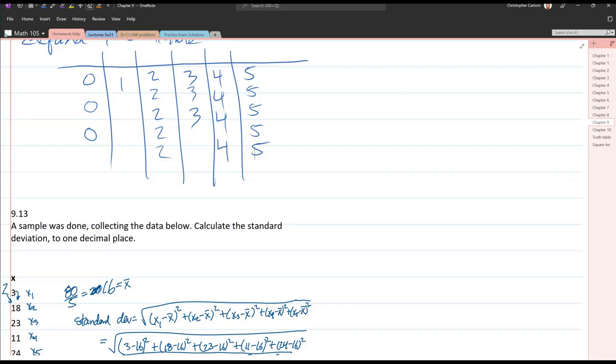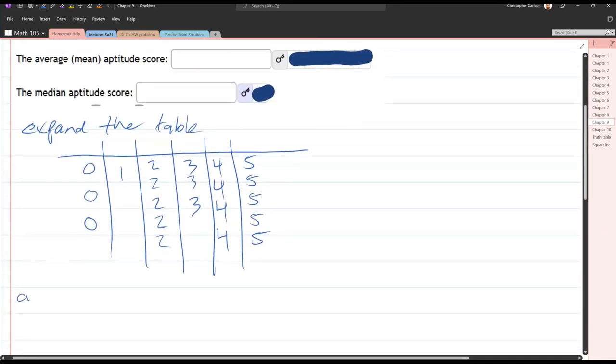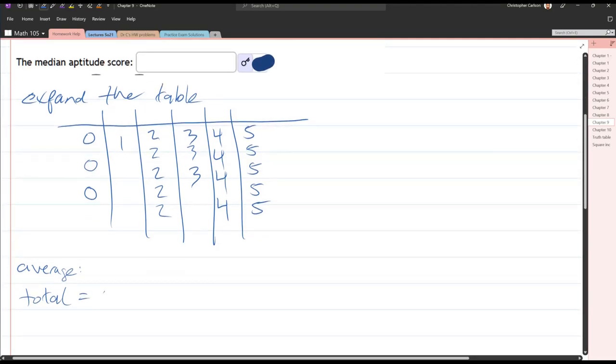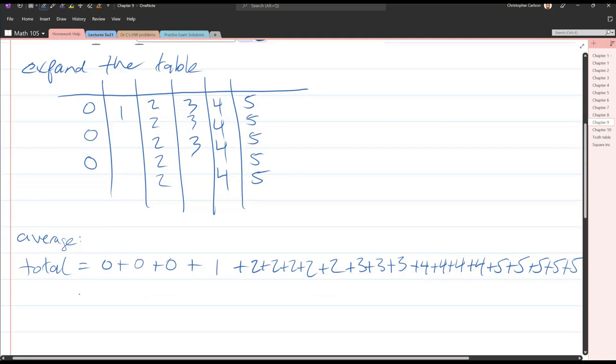Alright, so if I wanted to get an average or a mean, for the average I need the total. So the total is, add them all up: 0, 0, 0, plus 1, plus 2, 2, 2, 2, another 2 - 5 twos, 3 threes, 4 fours, and 5 fives. Alright, I was worried I was going to run out of room. It looks like I ended perfectly. This is a little bit of a crazy way to write the sum out. It's a lot of numbers written out. So what I'm going to do is I'm going to summarize the sum.